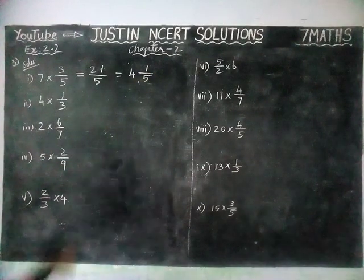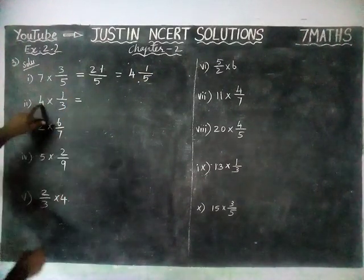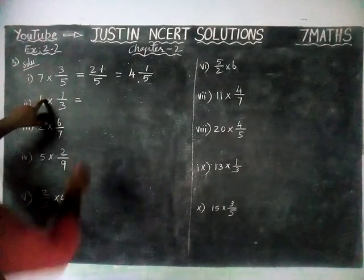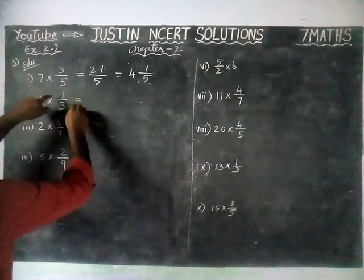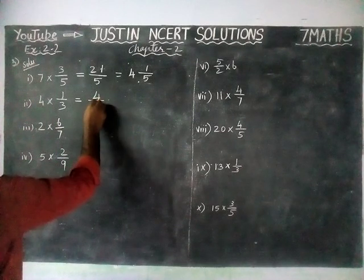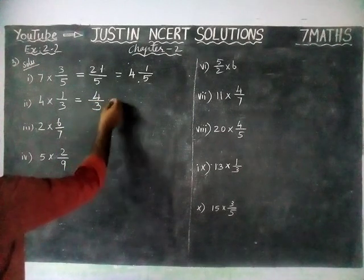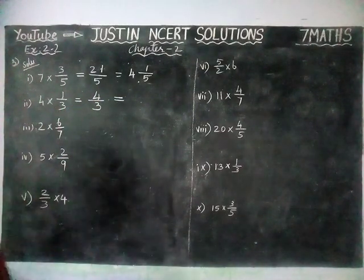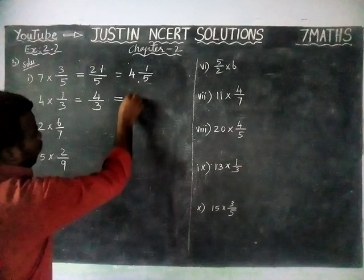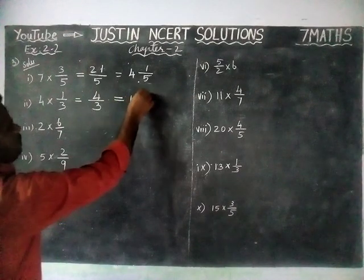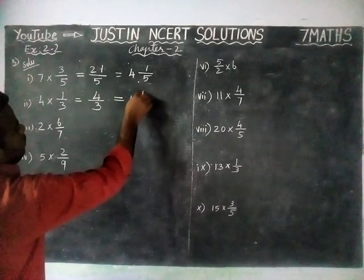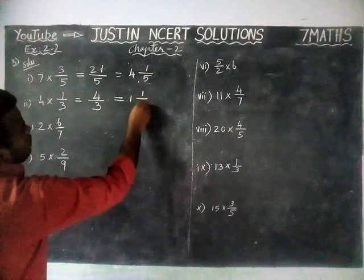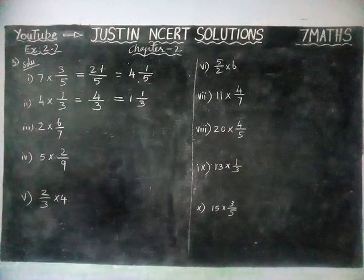Next question: 4 into 1 by 3. When we multiply the numerator, 4 into 1 is equal to 4 divided by 3. In 4, there is one 3, with remainder 1. That remainder is written in the numerator and the denominator is 3. So the answer is 1 and 1 by 3.